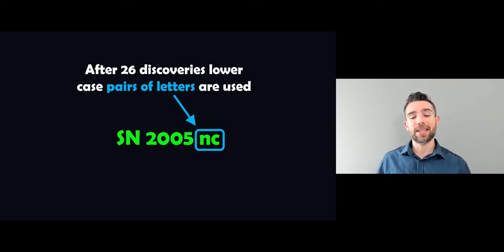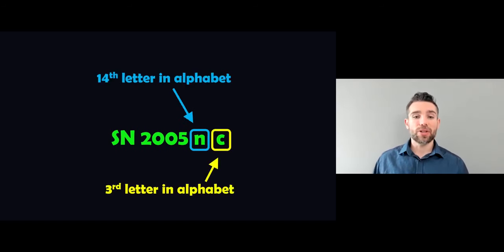But you may see some supernovas that have two lowercase pairs at the end instead of an uppercase single letter at the end. And when you have more than 26 discoveries, you need to add an extra letter on so you can then increase the number of supernovas you can have, the different number of combinations you can increase basically by adding another letter. So the first letter is the number of times that you've gone through the full alphabet and then to the next one.